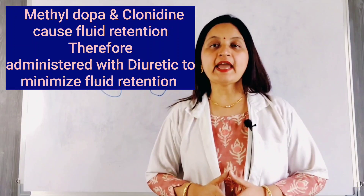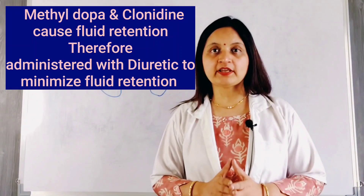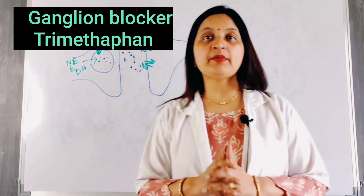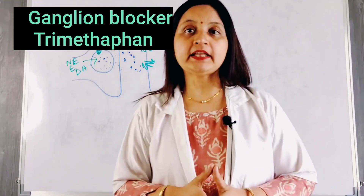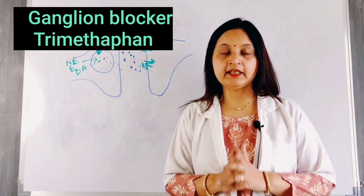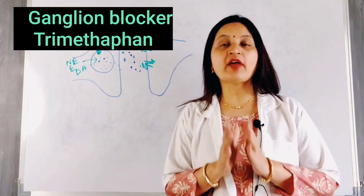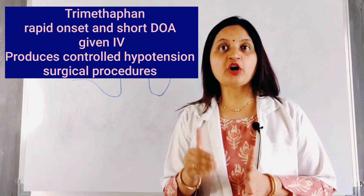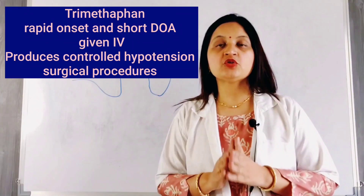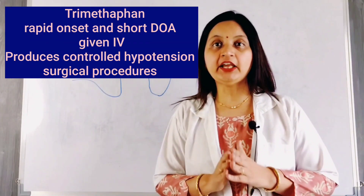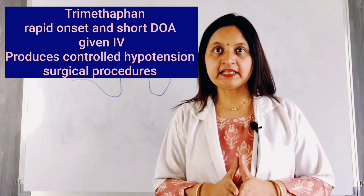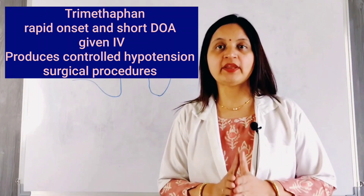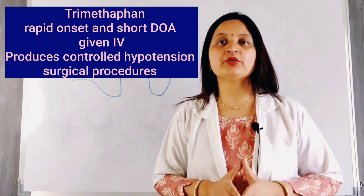The next drug is a ganglion blocker, for example trimethaphan. Trimethaphan inhibits both sympathetic and parasympathetic ganglia. It has a rapid onset of action and a short duration of action, so it can be given intravenously to produce controlled hypotension during a surgical procedure.